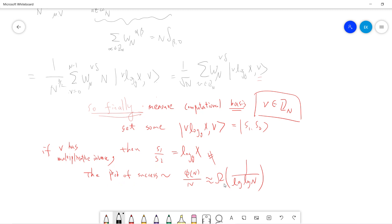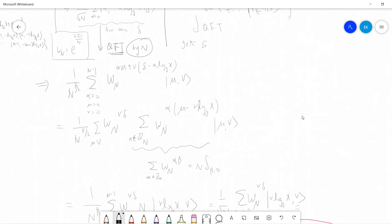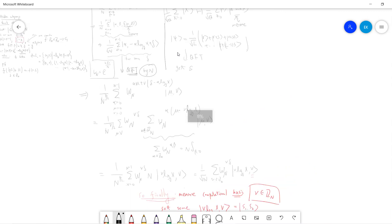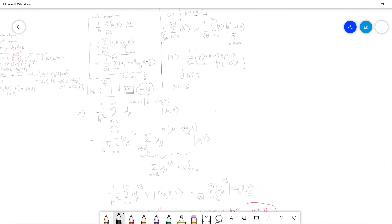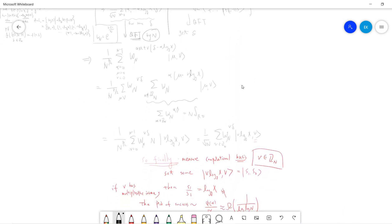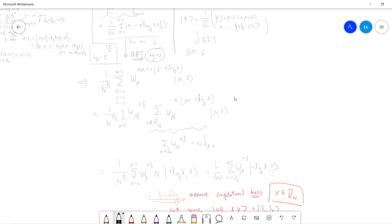The probability of success is basically one over log log n. It decreases very slowly, which means there is a high probability that if you run a few times of this Shor's algorithm process, then you can get the answer.